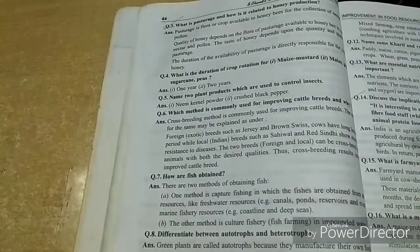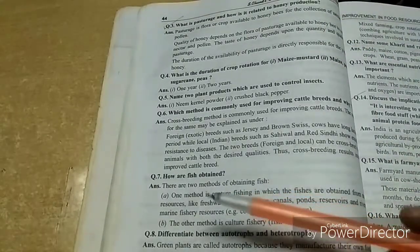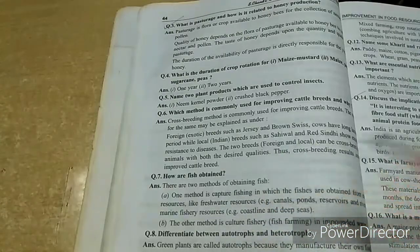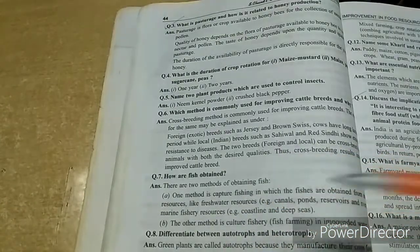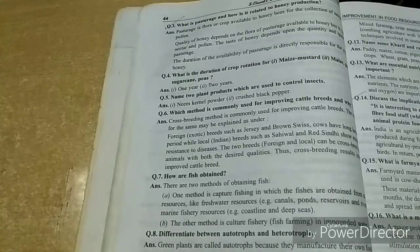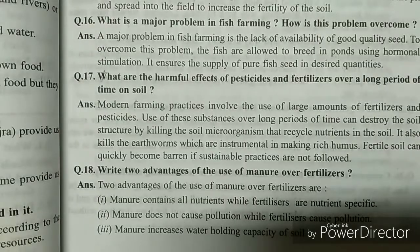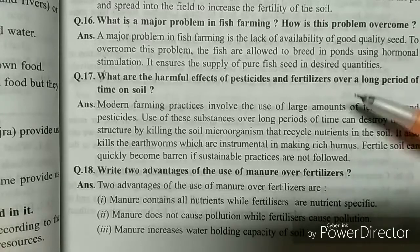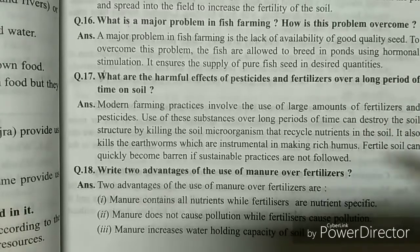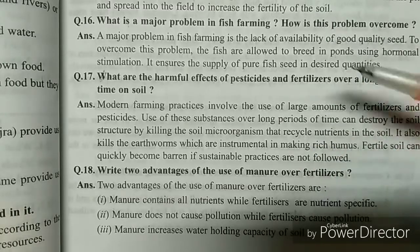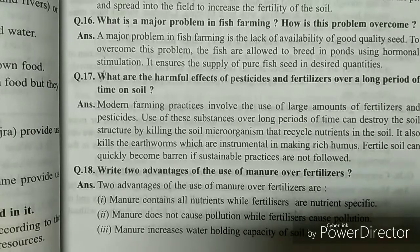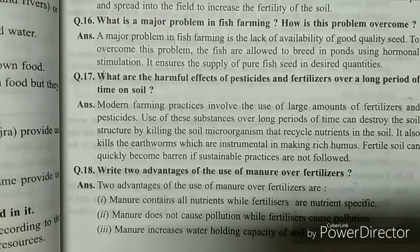How are fish obtained? — there are two methods you should know about; it's a very important part of the chapter. Then there are the harmful effects of pesticides and fertilizers — a very important question and answer. Advantages of the use of manure over fertilizers is another important question. These are general, thinking-based questions you can easily answer in the exam.